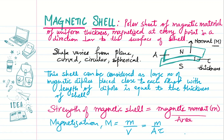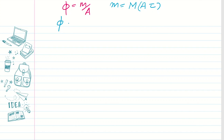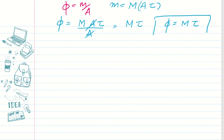Let's substitute for magnetic moment. We can write the magnetic moment as magnetization times volume, and substitute it in the strength expression. The strength, which we denote with phi, becomes magnetization times area times thickness over area. Canceling the area, the strength is defined as magnetization times thickness: φ = M·τ. This is the strength of the shell.